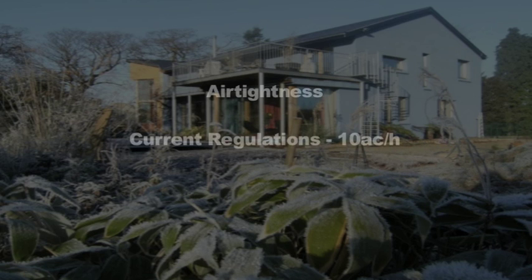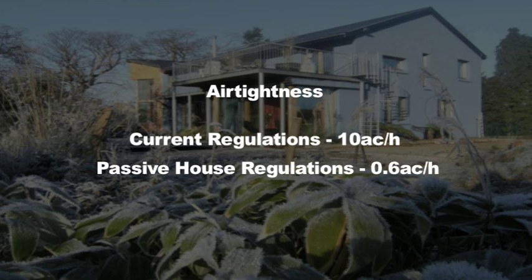In terms of air tightness, current building regulations require about 10 air changes per hour, whereas the Passive House standard requires 0.6 air changes per hour. That's what we'll be covering in this next series.